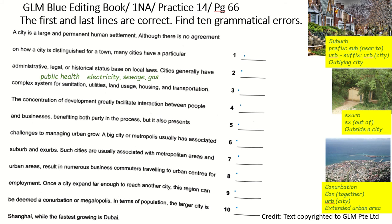Today we are doing the GLM Blue Editing Book for 1NA, Practice 14, page 66. You should attempt the questions before you look at this lesson demonstration. Make sure that you have a pen and a highlighter with you. The first and the last lines are correct — find 10 grammatical errors. Put a tick on the first and the last line to tell yourself that it's correct.